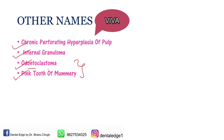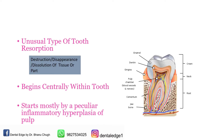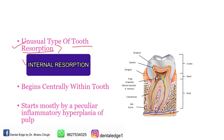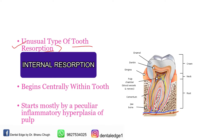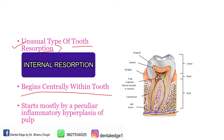Why is it called odontoclastoma or pink tooth of Mummery? Once I explain the topic you will understand it very nicely. Internal resorption is an unusual type of tooth resorption. Resorption means destruction, disappearance, or dissolution of tissue or part. Internal resorption is a type of resorption that begins centrally within the tooth — therefore the name internal resorption.